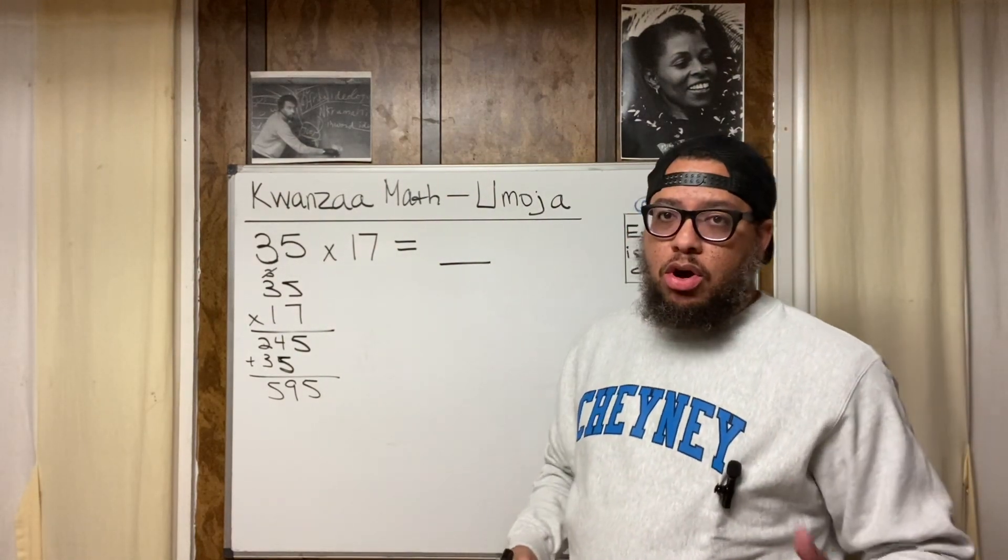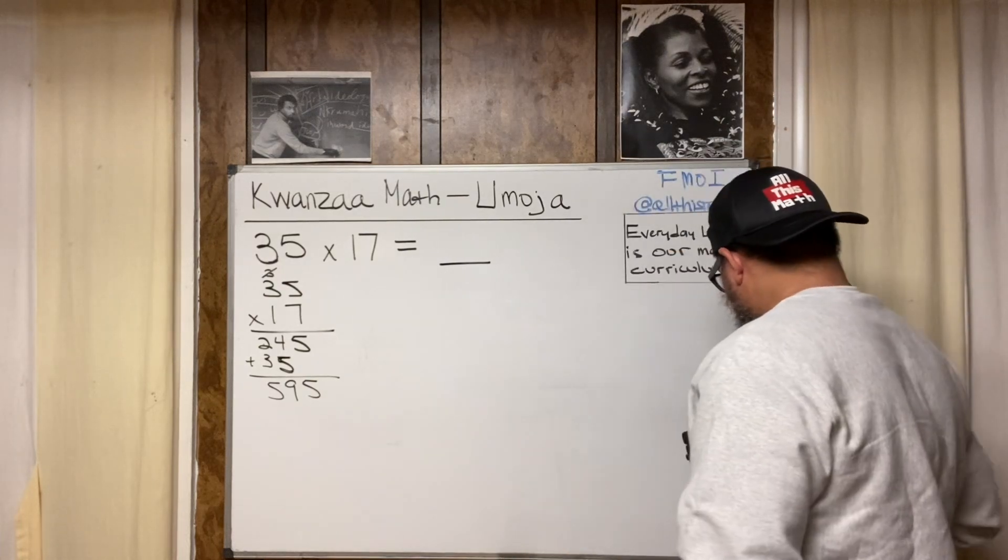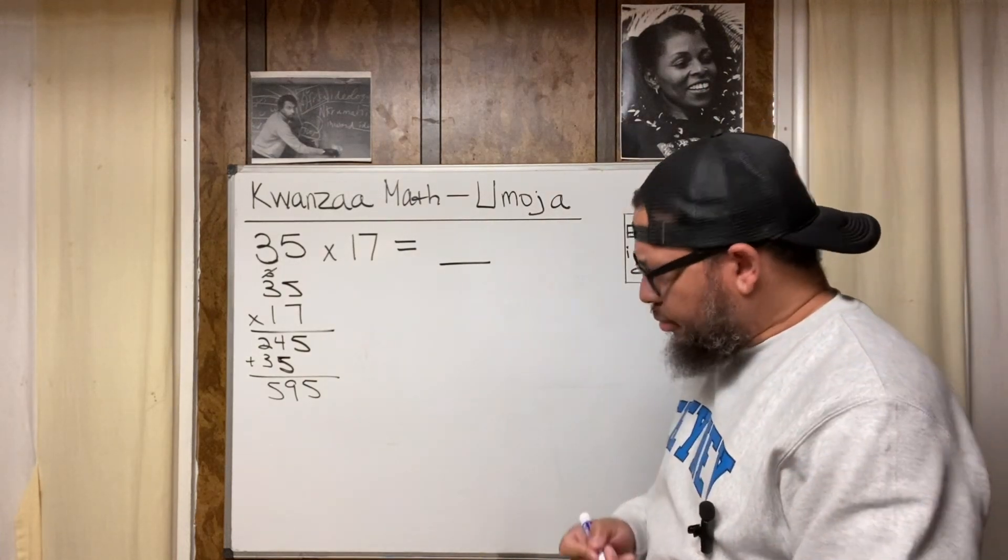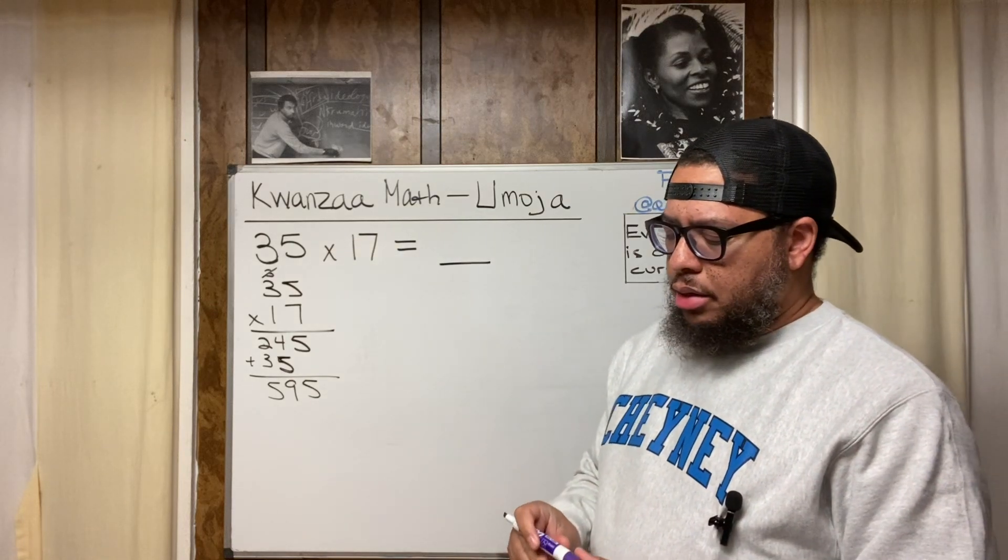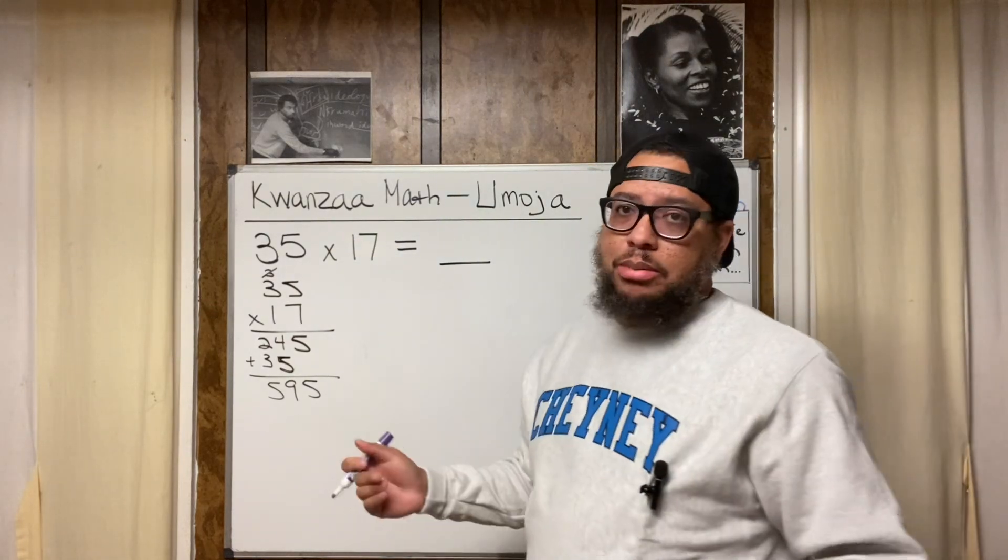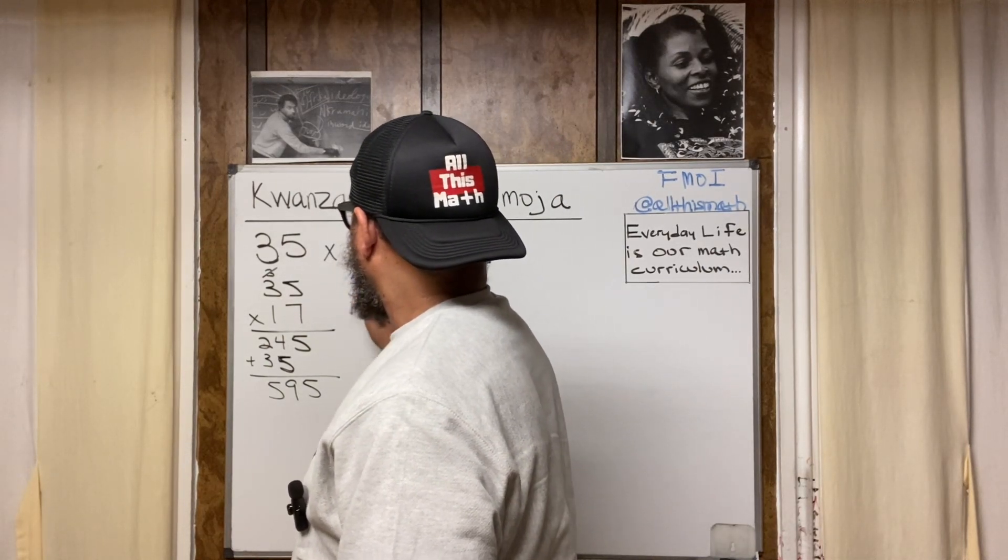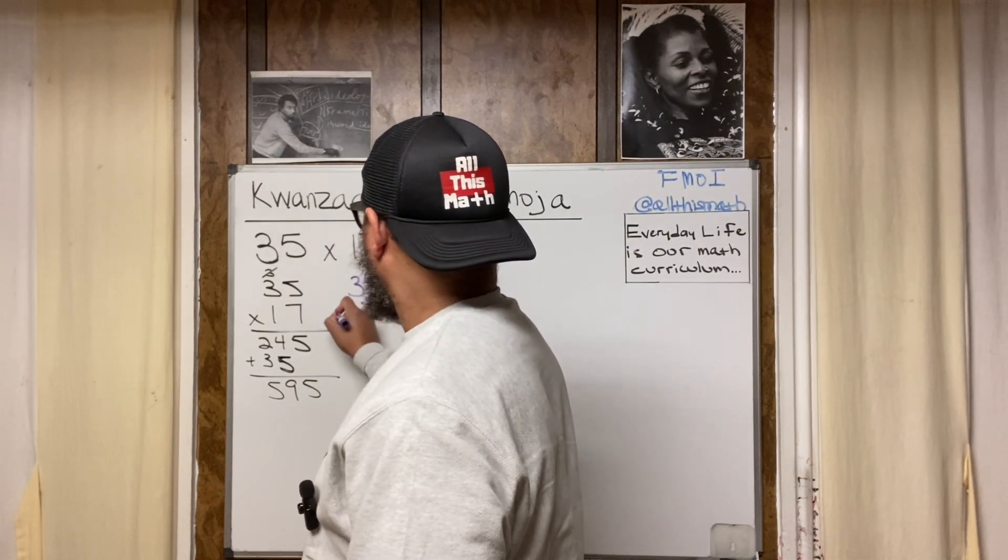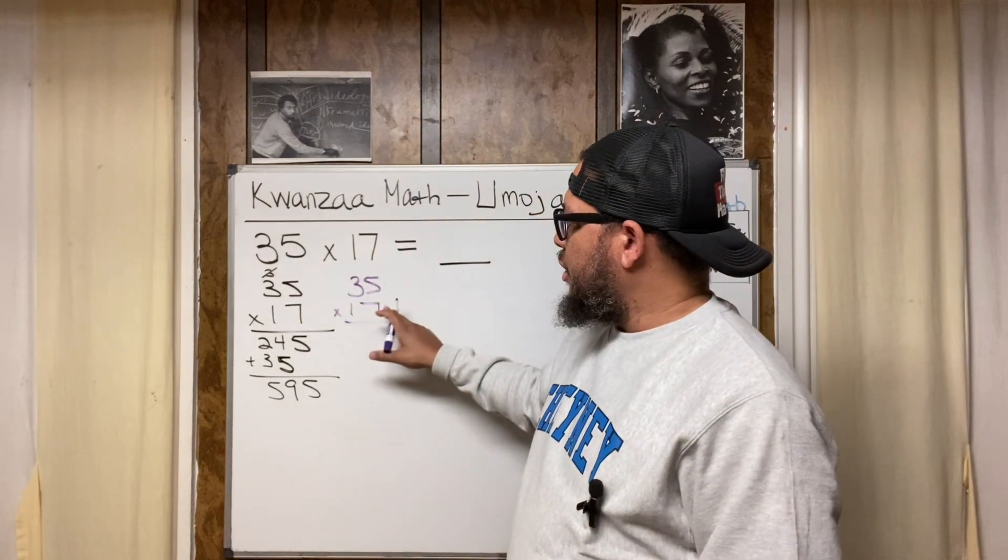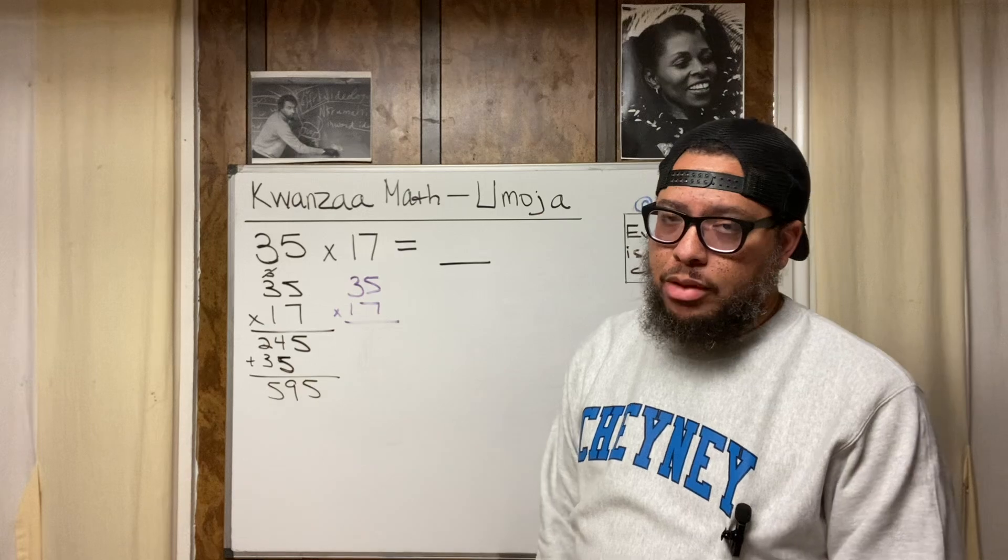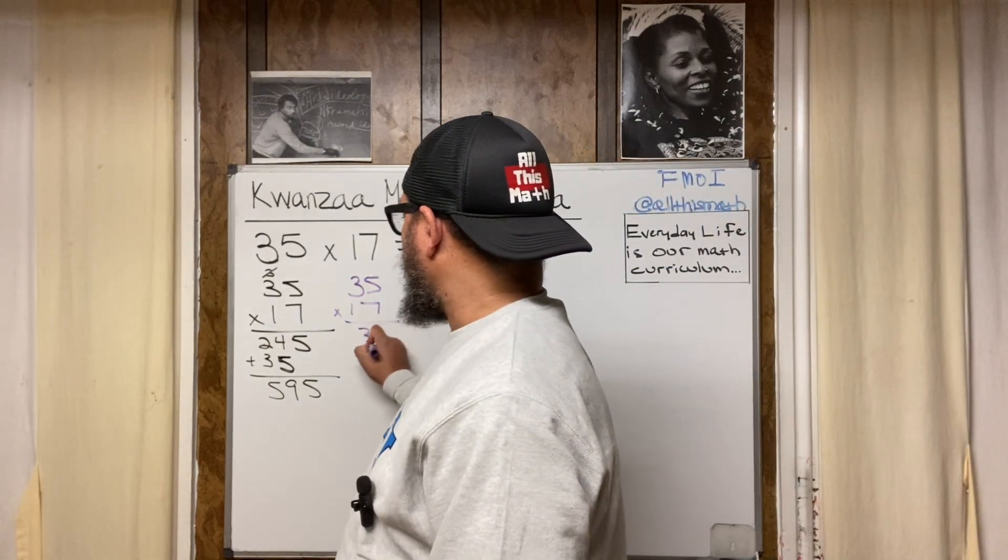Now, I want to do another method called partial products. Let me switch the color up. Partial products is a similar setup to this, but we actually, we don't carry numbers. We don't carry numbers. So let's say we do 35 times 17 and I'm multiplying. So then we're going to start with the 7 just like we did in this method. 7 times 5 is 35. So I'm not going to carry the 3. I'm just going to write 35. The full product, 35.